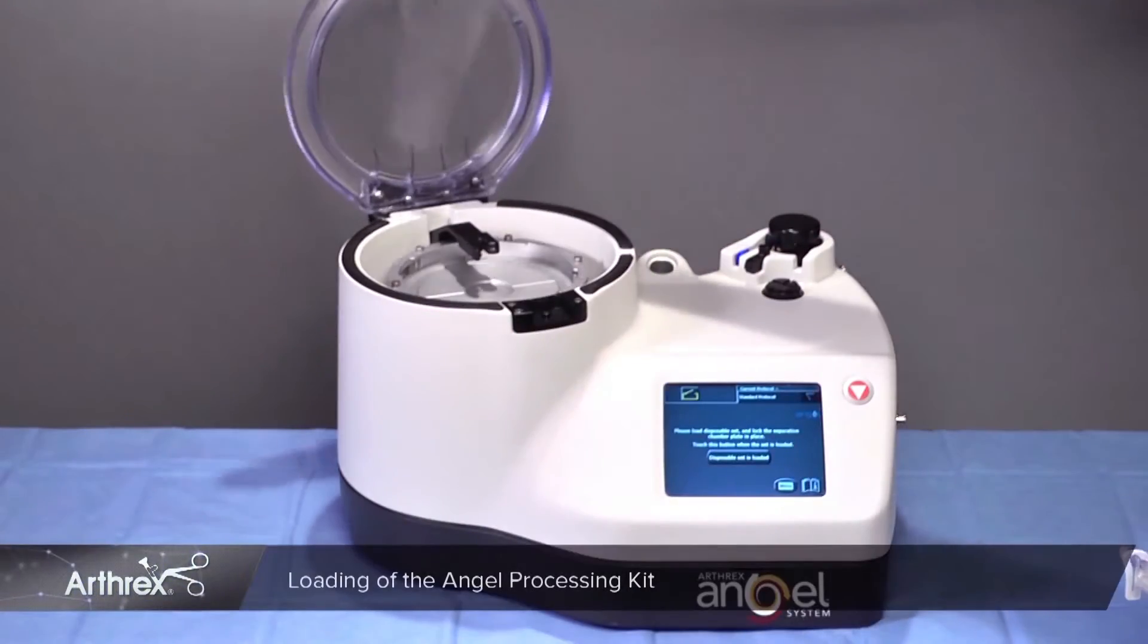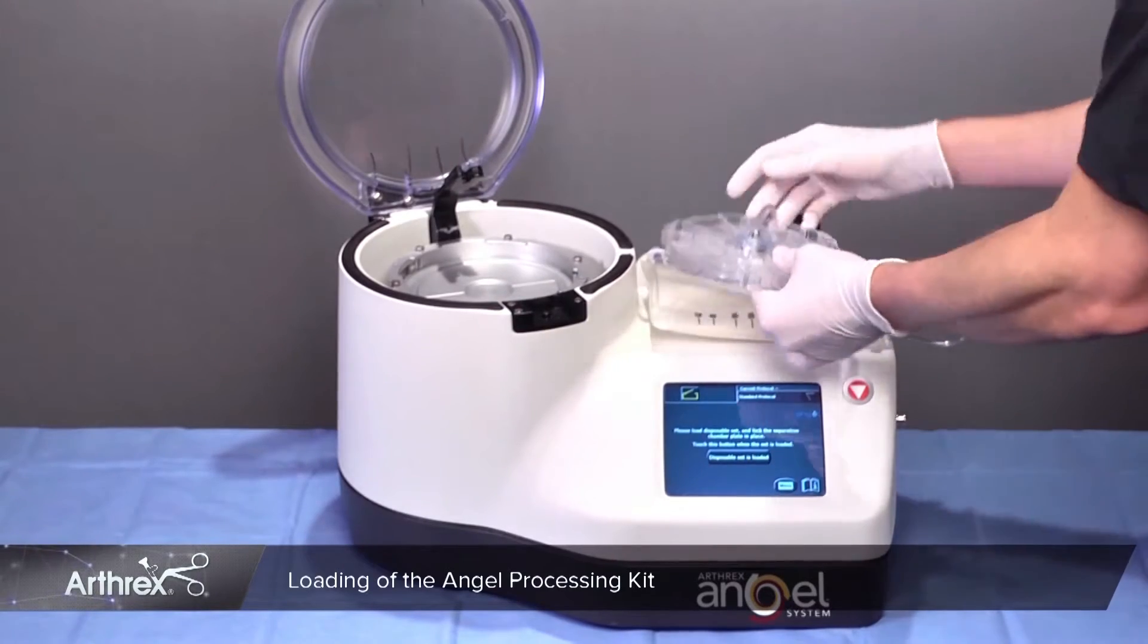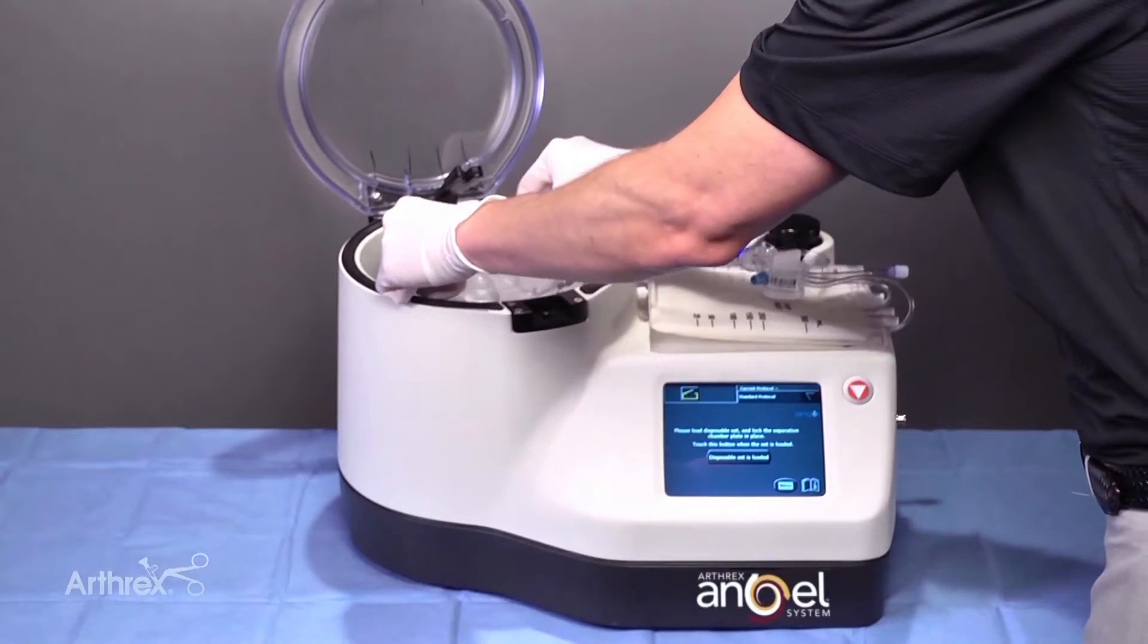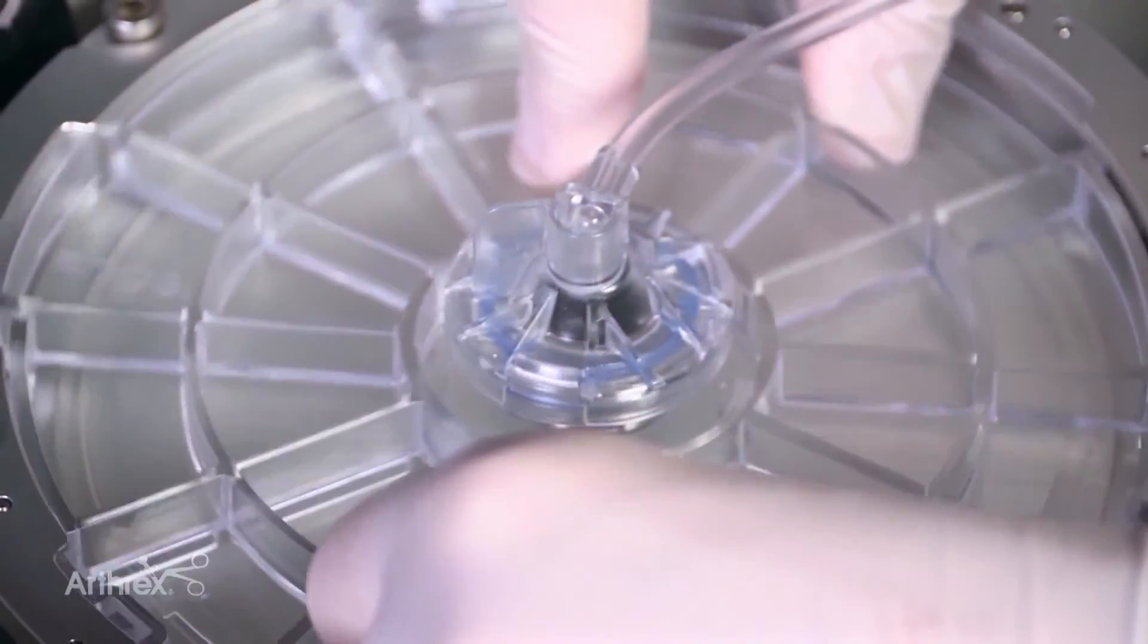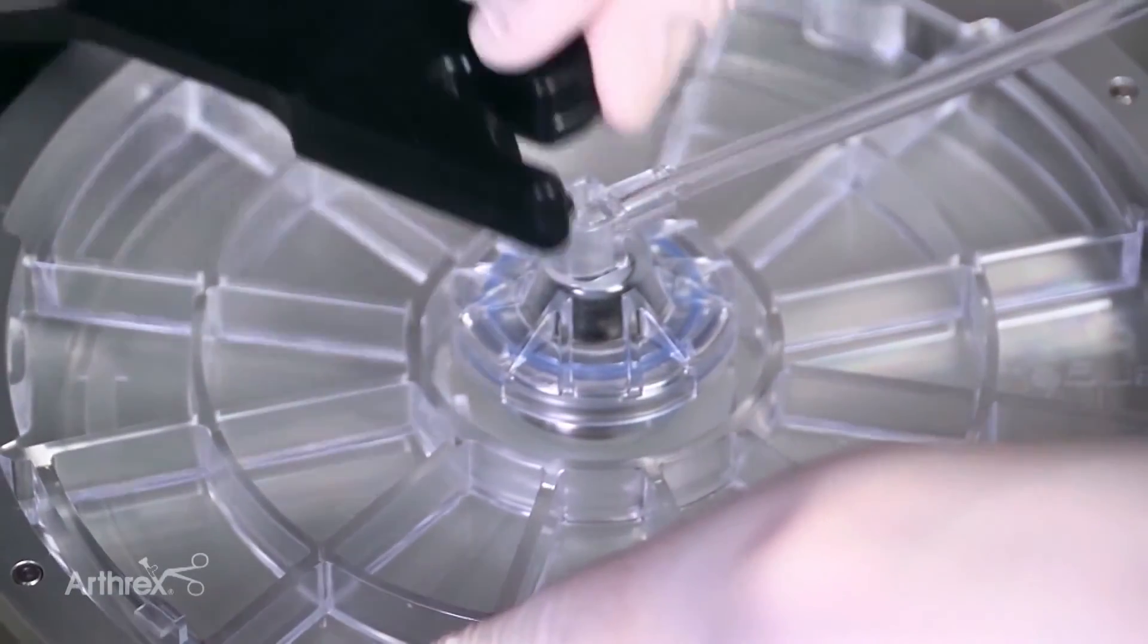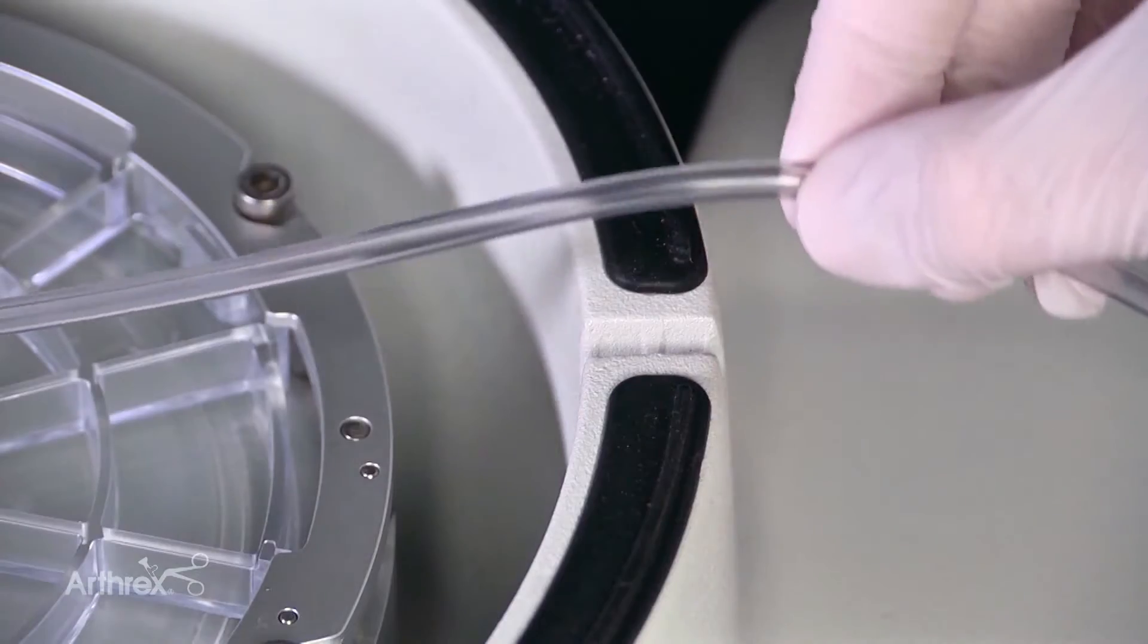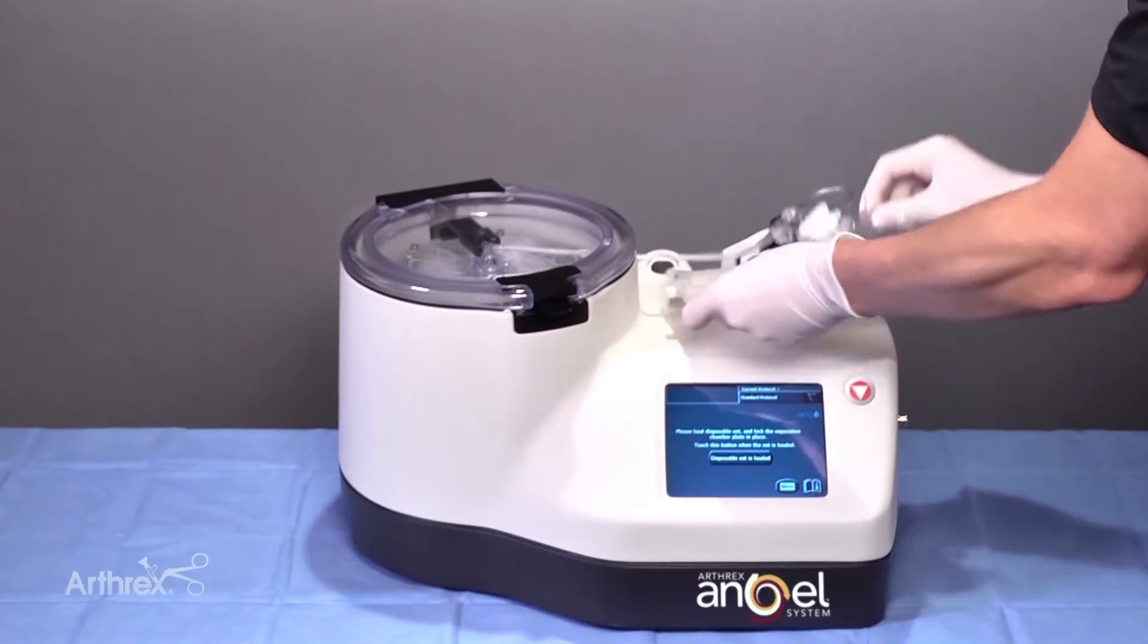Begin by opening the centrifuge lid and lift the centrifuge stator arm. Insert the separation chamber into the centrifuge adapter taking care to align the notches on the centrifuge adapter. Turn clockwise until the safety wings lock. Lower the centrifuge stator arm. Place the tubing in the centrifuge well slot. Close the centrifuge lid.